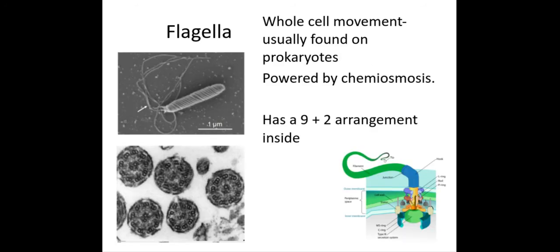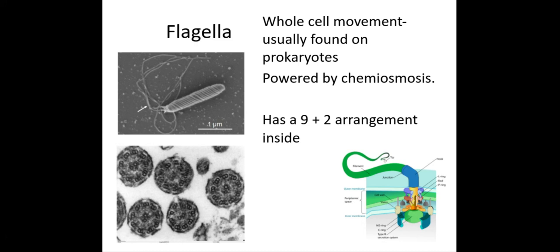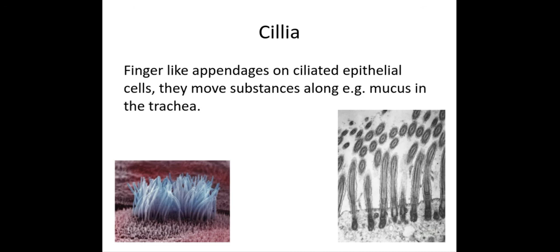You can also find flagella on prokaryotes, which have a 9+2 arrangement inside — that refers to the arrangement of the internal structure. It is powered by chemiosmosis to allow the whole cell to move.